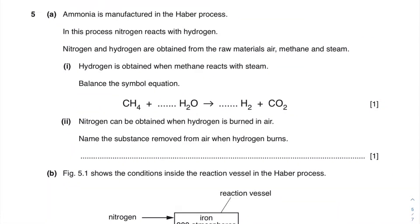We're going to go through this exam question about the Haber process, and then later on it goes to a little bit of moles. So first of all, let's read it together. Ammonia is manufactured in the Haber process — I would highlight this to make sure I knew it was about the Haber process. In this process, nitrogen reacts with hydrogen to make ammonia. Hydrogen and ammonia are obtained from the raw materials air, methane and steam.